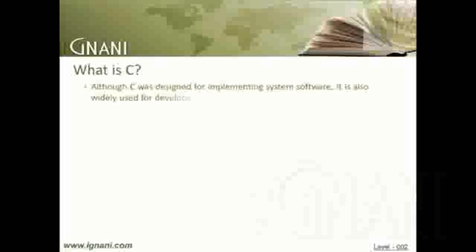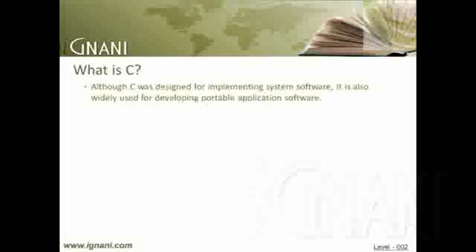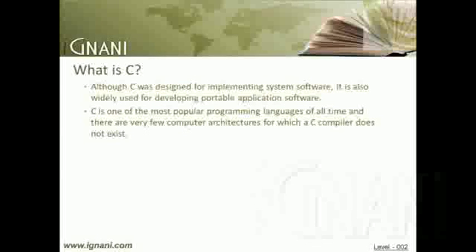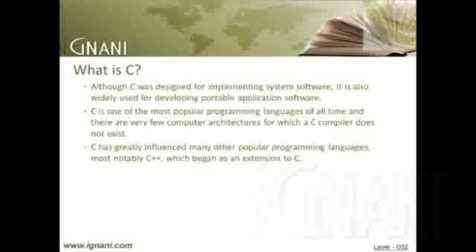Although C was designed for implementing system software, it is also widely used for developing portable application software. C is one of the most popular programming languages of all time, and there are very few computer architectures for which a C compiler does not exist. C has greatly influenced many other popular programming languages, most notably C++, which began as an extension to C.